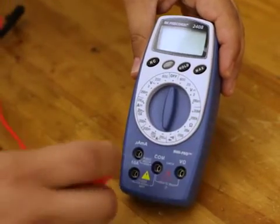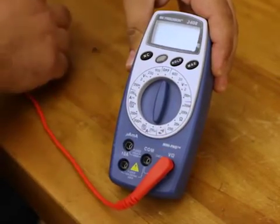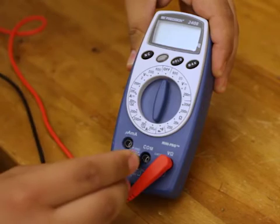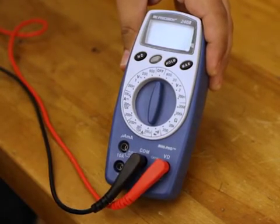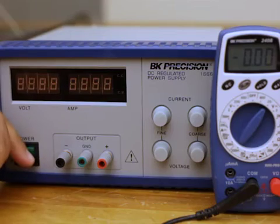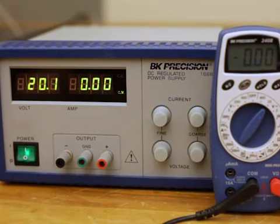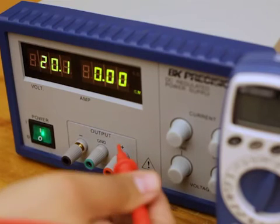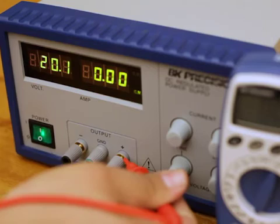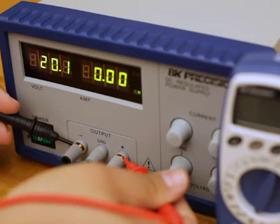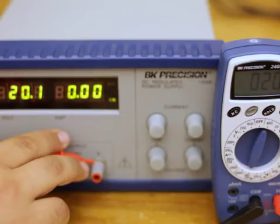To measure voltage, insert the red probe into the contact labeled V ohms, and the black probe in the contact labeled COM for common. Turn on the DC power supply and set it to output 20 volts. Measure across the two output terminals by touching the red probe to the plus terminal, and the black probe to the minus terminal. The multimeter reads 20 volts.